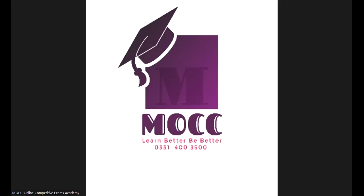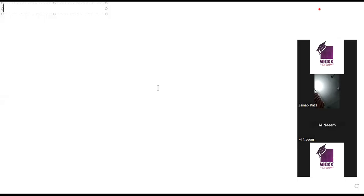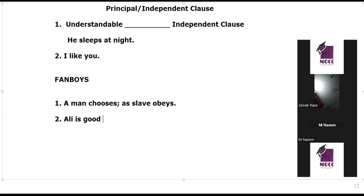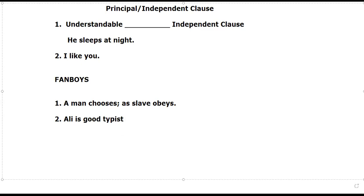We were discussing how we would like to use semi-colons. Let me tell you — if I am writing a sentence here, I would like to use: 'Ali is a good typist. He makes few mistakes.' Now, I will tell you that here is where semi-colons come in — where you have two clauses. The semi-colon is going to be put in.